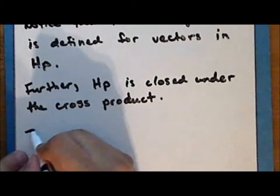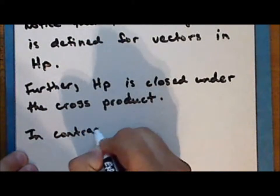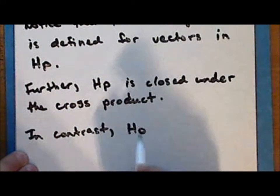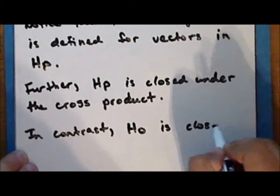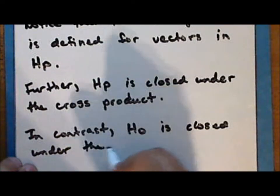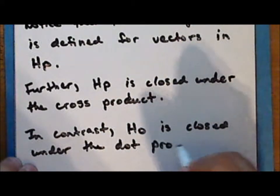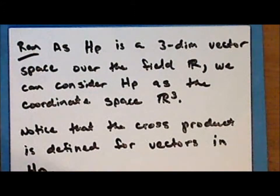In contrast, the set of pure scalars or pure real numbers is closed under the dot product. Now let's look at an example of the cross product.